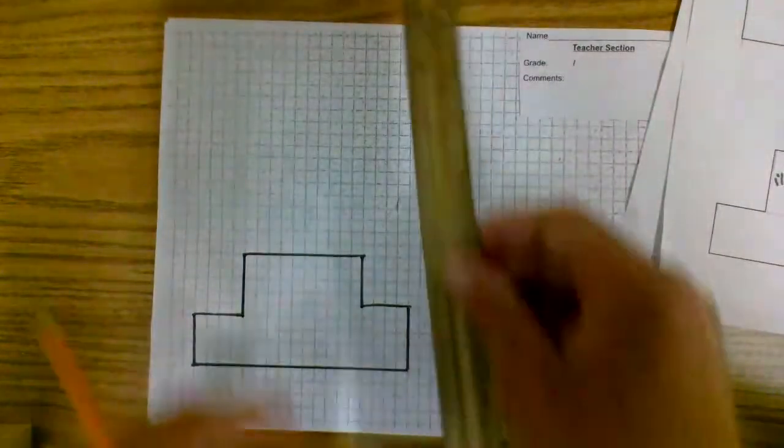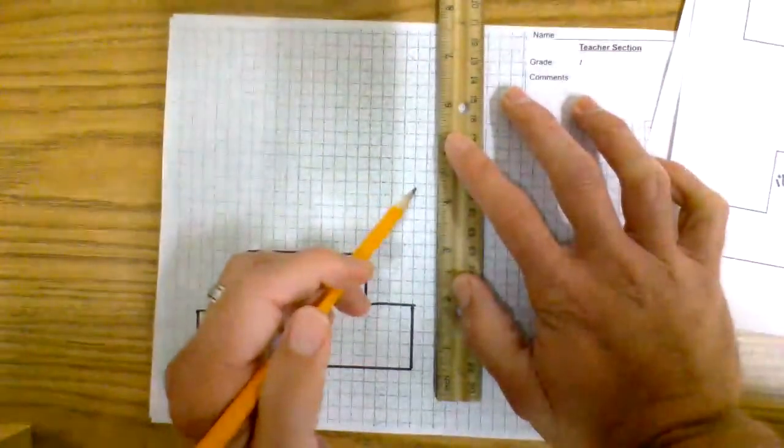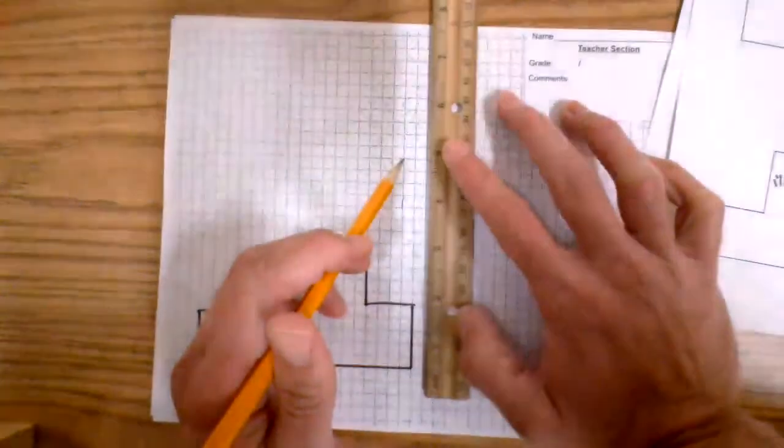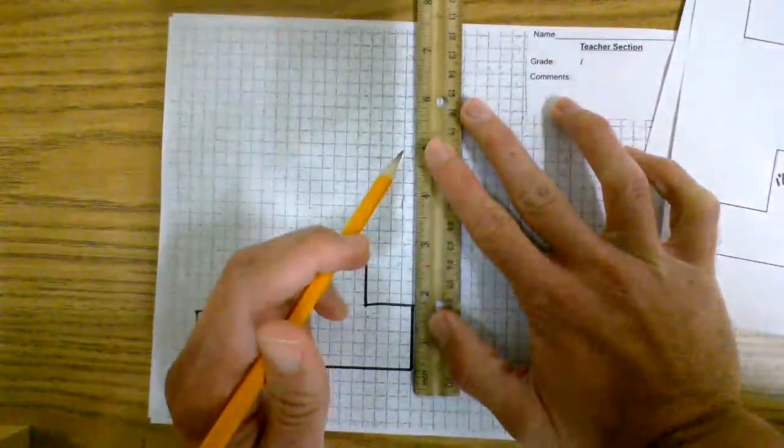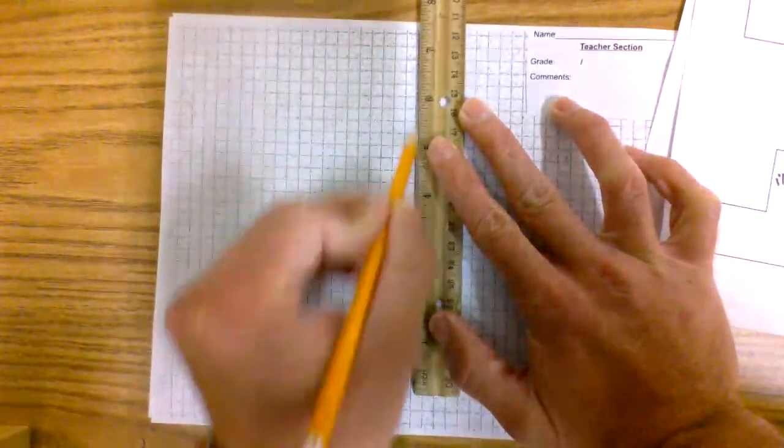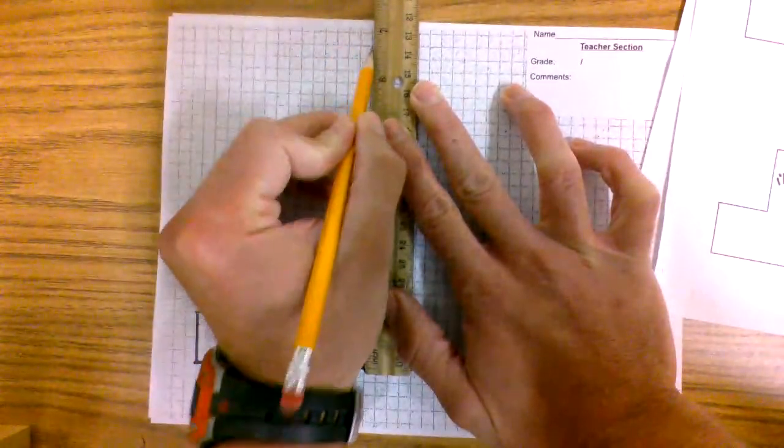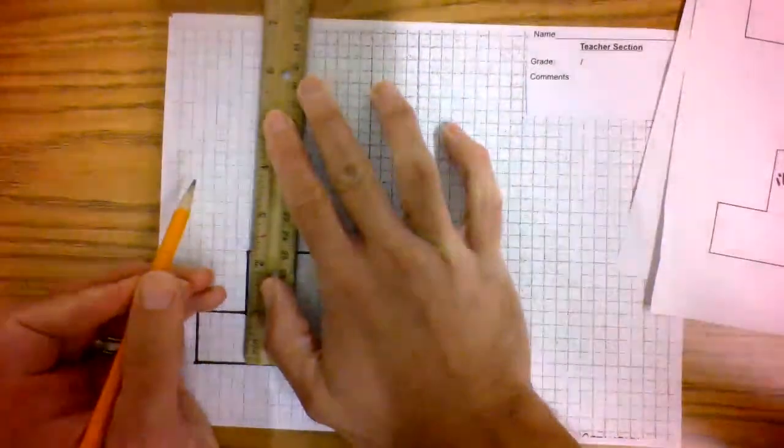Okay, so take our straight edge. Oh wait, look, if you're using graph paper, your lines are already there. But just for practice, remember, we're going to do these super light so we can erase them later. That is way off.